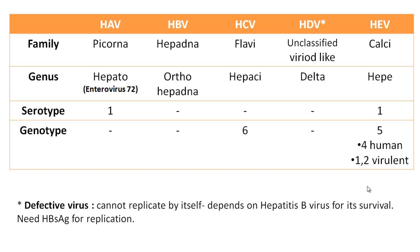Hepatitis A virus belongs to the Picornaviridae family and the genus Hepatovirus. Earlier it was called enterovirus 72 and it has only one serotype. Hepatitis B virus is the only DNA virus among all five and belongs to the Hepadnaviridae group, genus Orthohepadnavirus. HCV belongs to Flaviviridae, genus Hepacivirus. HDV or hepatitis D virus cannot be classified into a particular family; it is sometimes known as a viroid-like particle and is included in the genus Deltavirus. HEV belongs to Caliciviridae, genus Hepevirus, and has only one serotype.